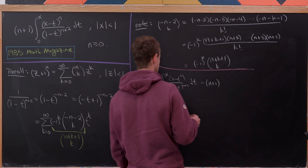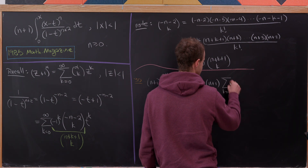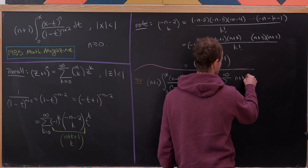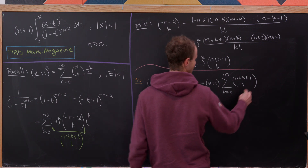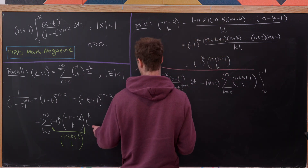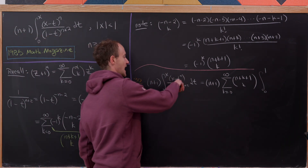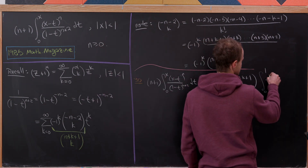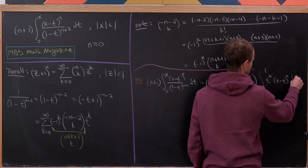So we have n plus 1 times the sum as k goes from 0 to infinity of n plus k plus 1 choose k, times the integral from 0 to x of t to the k times x minus t raised to the n power dt.